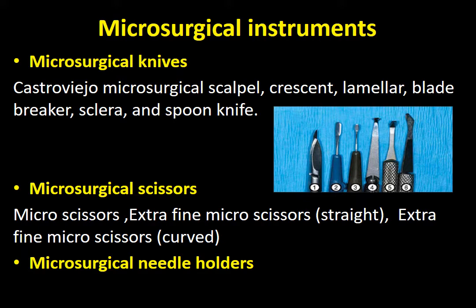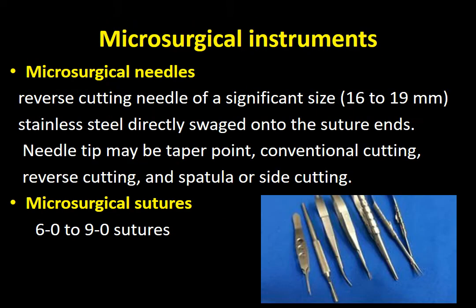In the picture you can see six types of microsurgical knives used for periodontal surgery. Microsurgical scissors, also called micro scissors or extra-fine micro scissors, can be curved. The needle holder is a miniature of the regular instrument. The microsurgical kit includes a BP handle, straight scissors, curved scissors, and needle holder — all in miniature size. Reverse cutting needles range from 16 to 19 mm and are spatula needles with a taper point, conventional cutting, or reverse cutting tip.